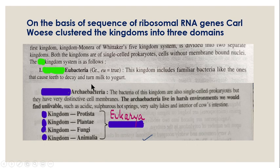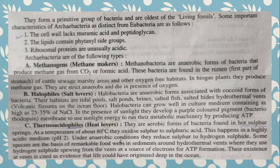Archibacteria are also single-cell prokaryotes, but they live in harsh environments and they are ancient — Archaea is from the very beginning. If we talk about how they are distinct from Eubacteria: their cell wall lacks muramic acid and peptidoglycan, and ribosomal proteins are usually acidic. We can categorize Archibacteria into three types or subcategories.